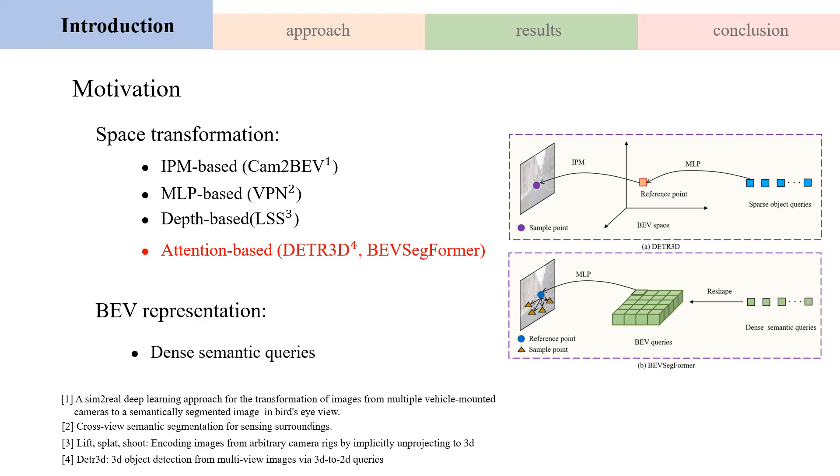Our approach differs from DETR3D in several ways. First, BEV segformer builds dense BEV queries for the semantic segmentation task. Second, our method directly predicts a reference point on image feature space through MLP operator. In this way, the view transformation does not rely on camera extrinsic parameters.